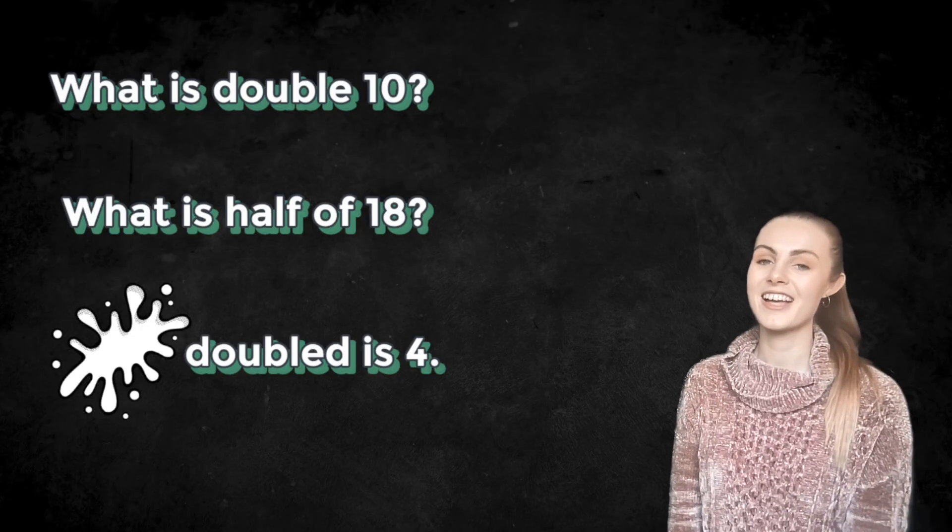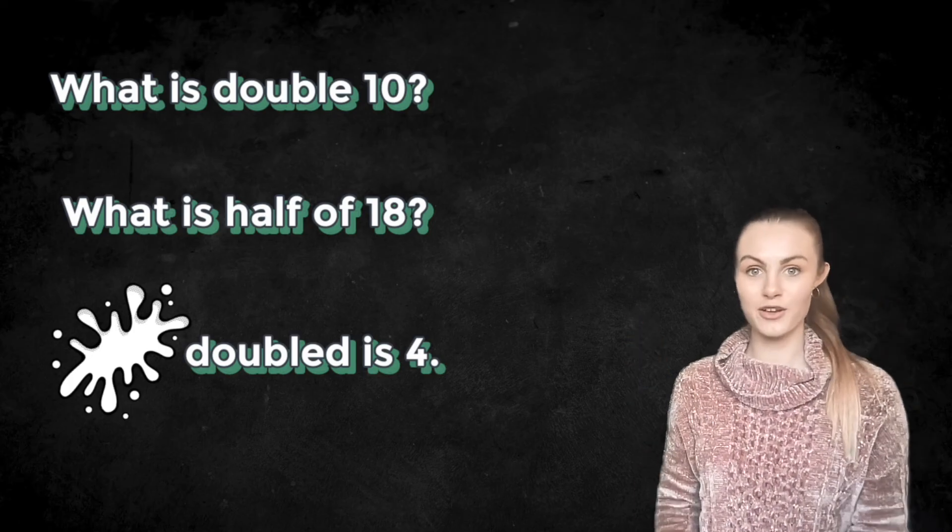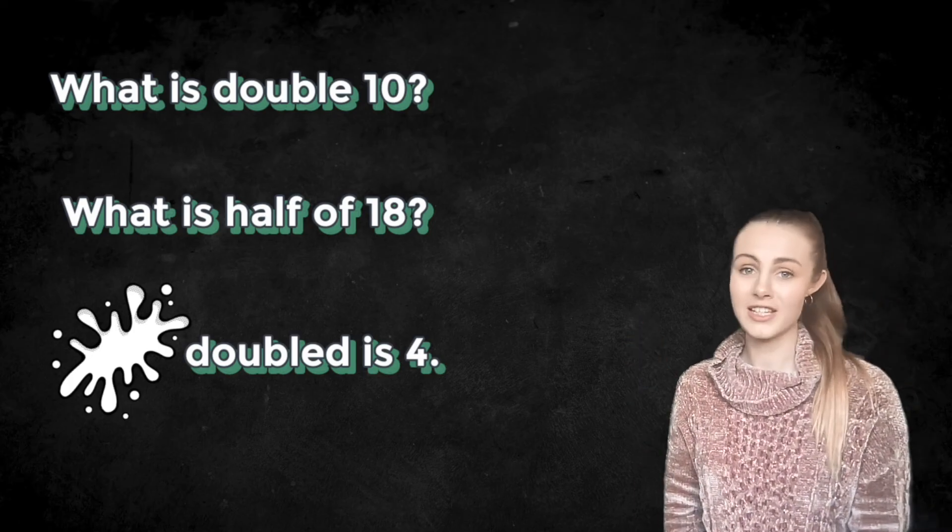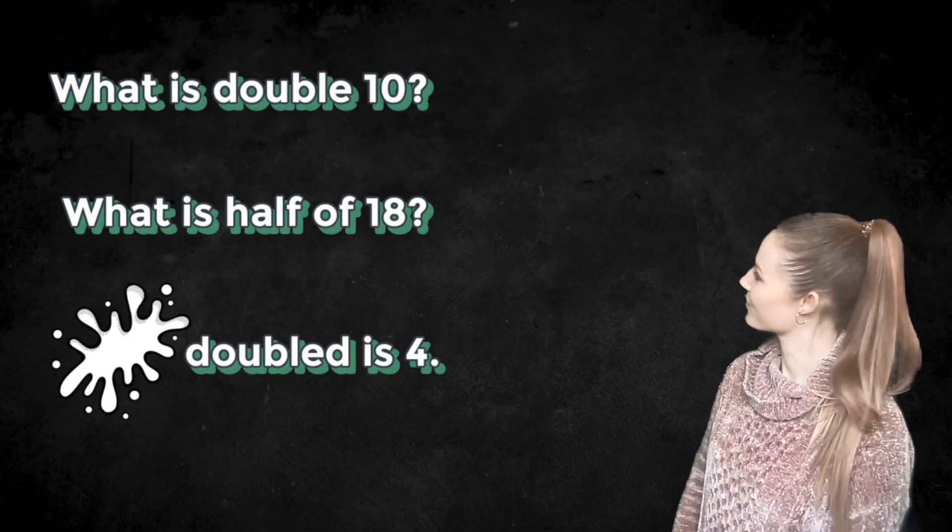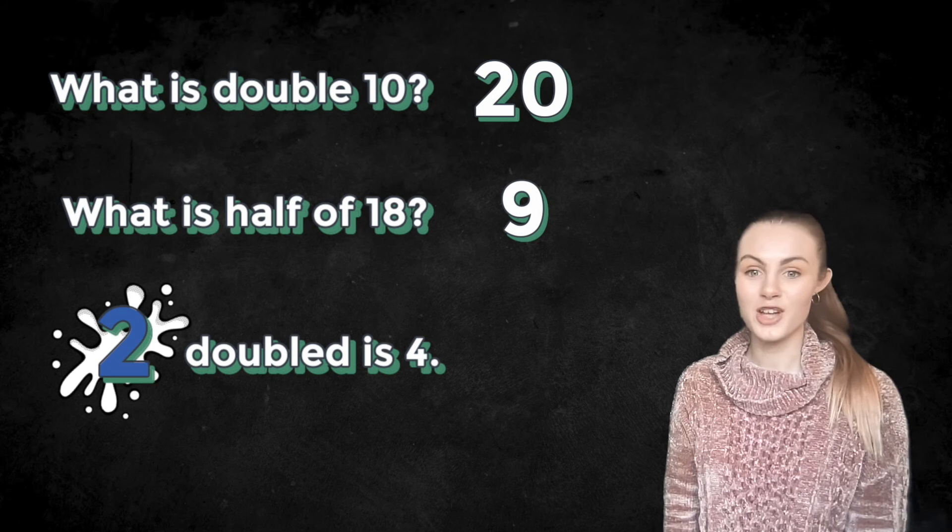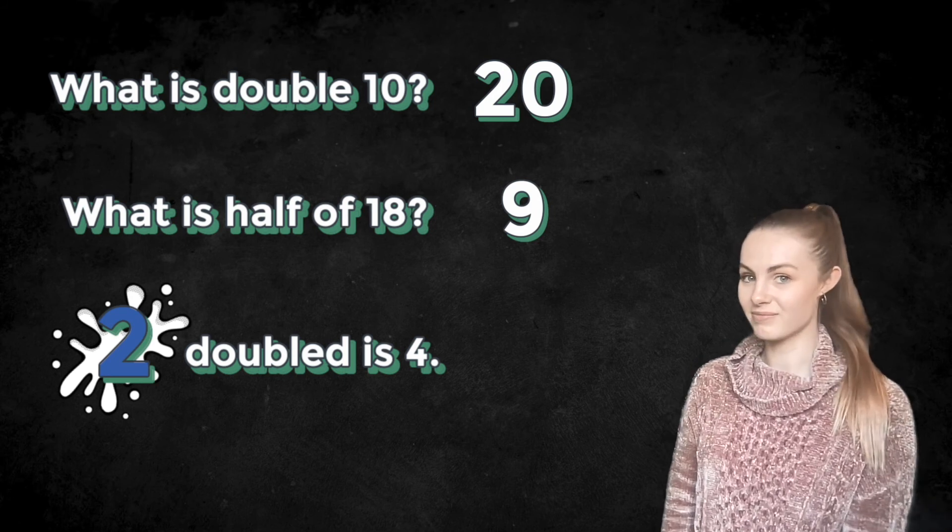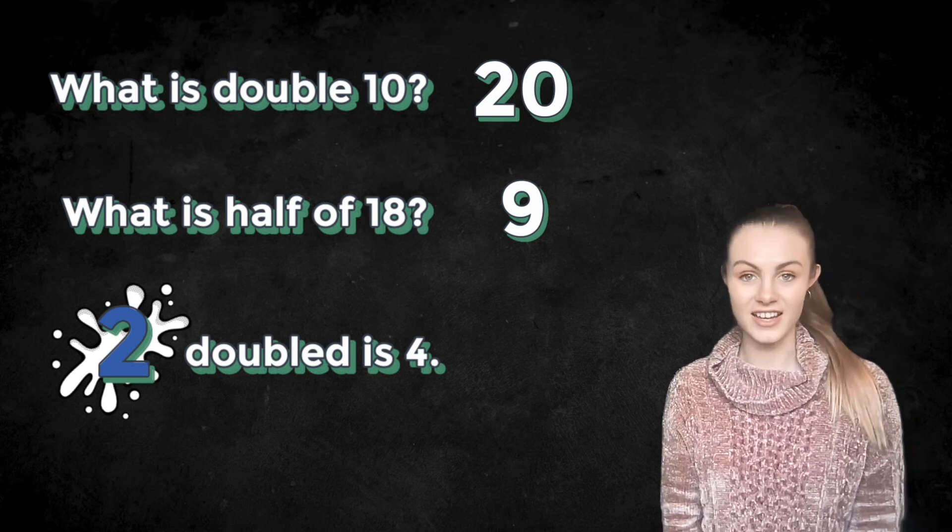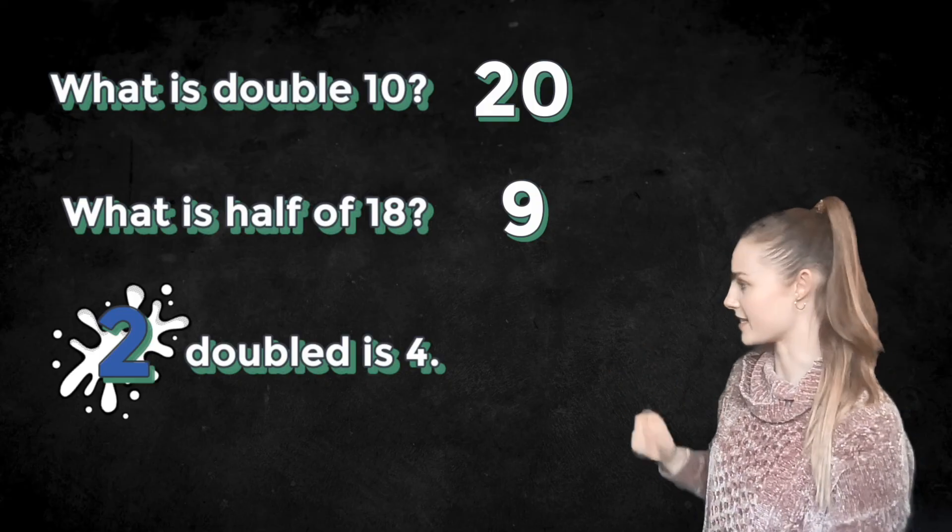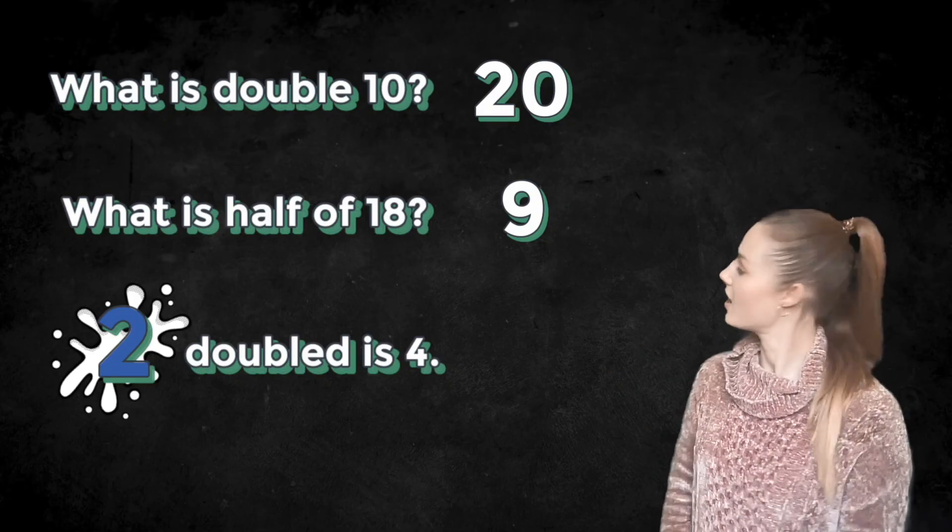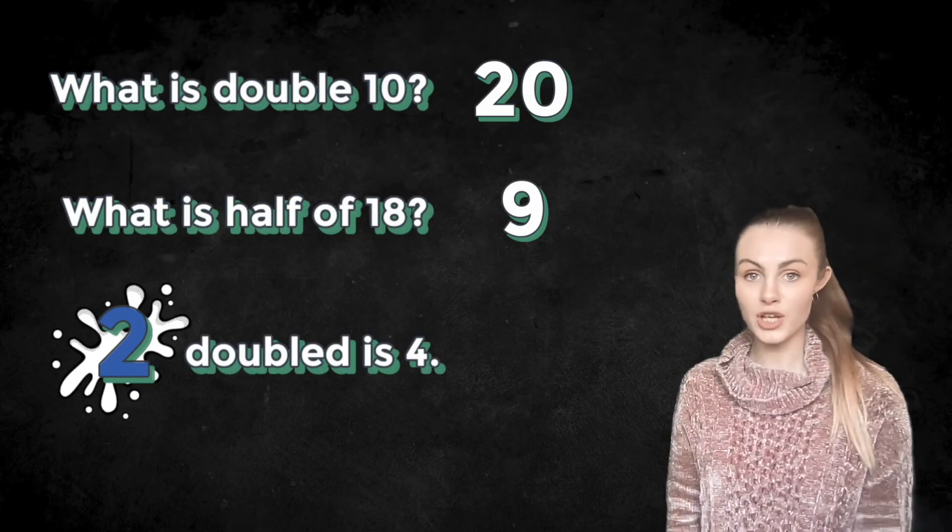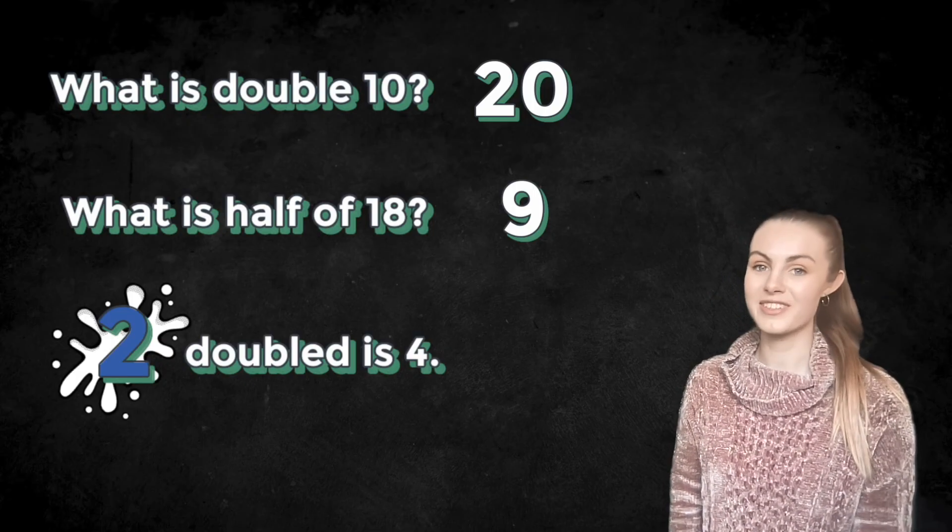Welcome back. I'm going to put the answers up on the screen now so that you can see how you did. Remember, don't worry if you didn't get them all right first time. It just means you're on your learning journey. So double 10 is 20. Half of 18 is 9. And this one was really sneaky because you actually had to halve it to find the answer. Half of 4 equals 2, which means double 2 equals 4.